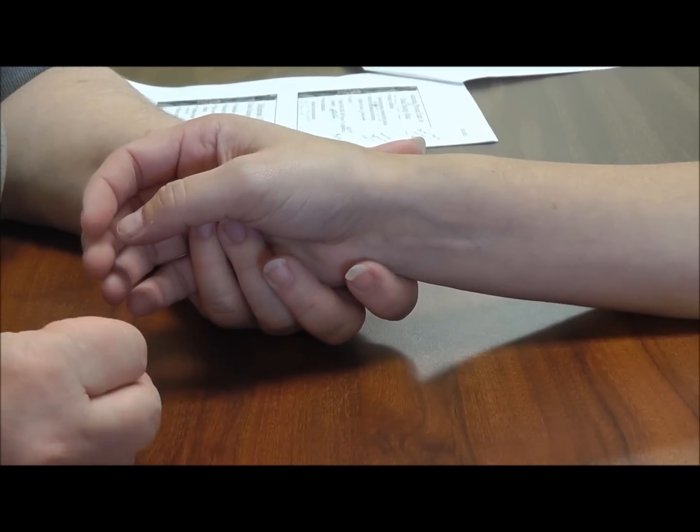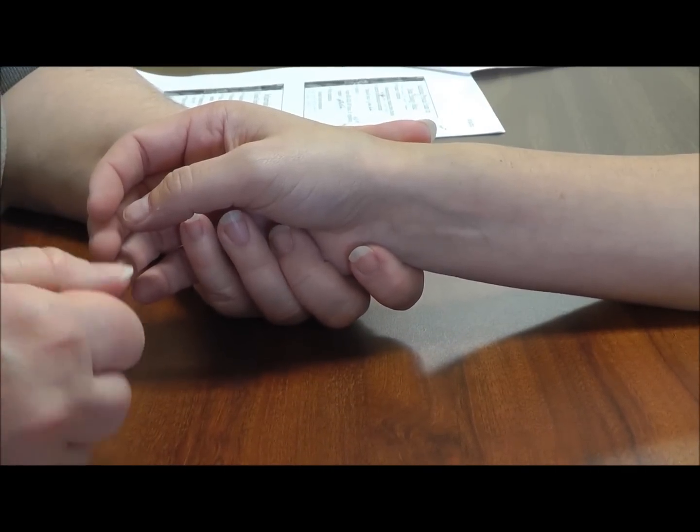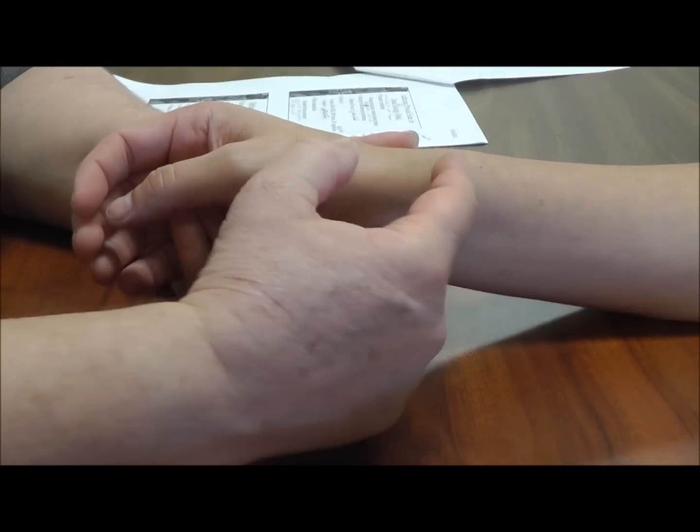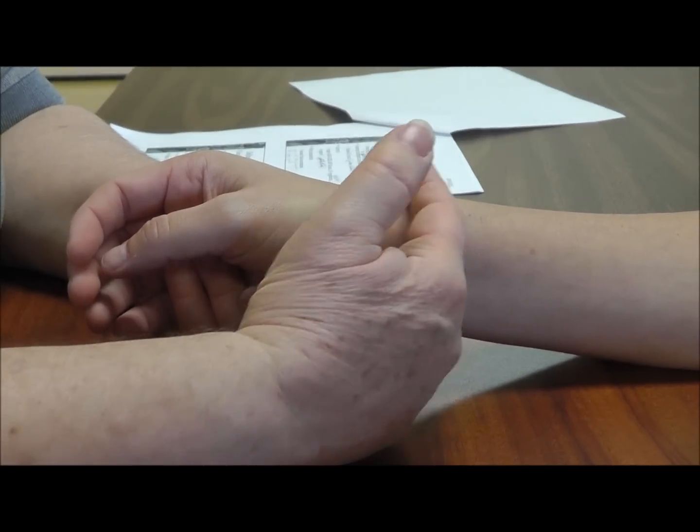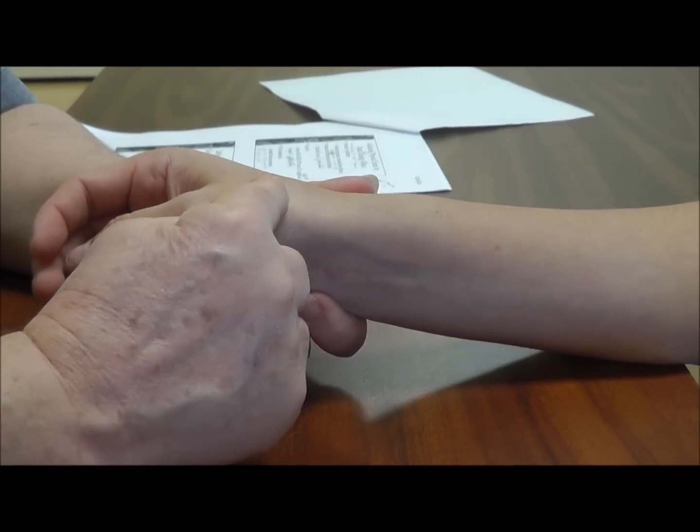With De Quervain's you're expecting really sharp startling pain when they grip or try to pick up something a certain way. Most of the time those clients will show you exactly this region where the tendon sheaths are. They'll show you that they get the pain right in here.